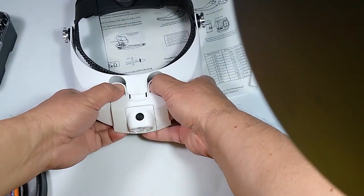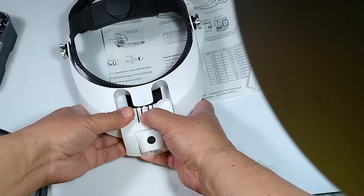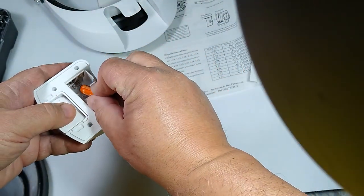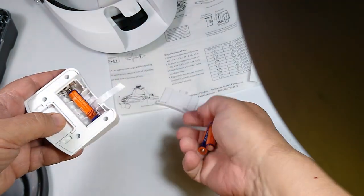In the front part of the magnifying glass there is a light which theoretically should illuminate the work place. It is powered by 3 batteries.